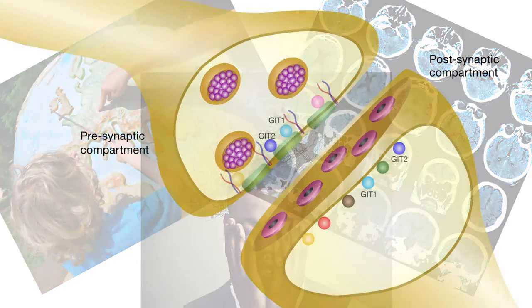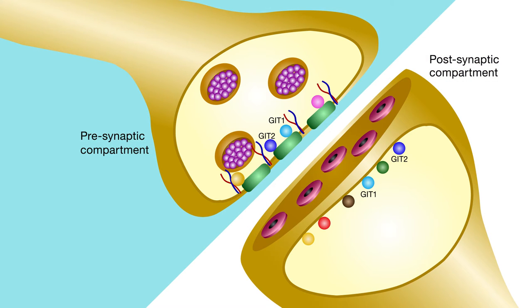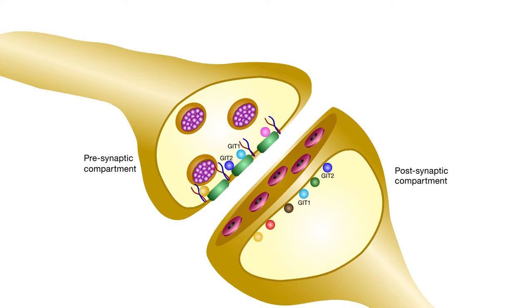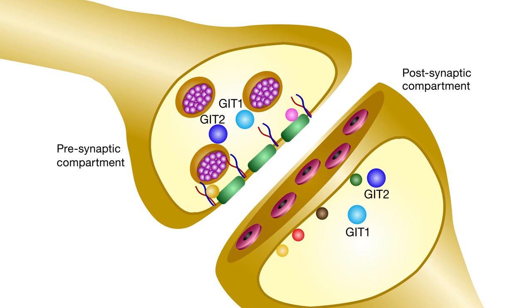Although the function of GITs in the post-synapse has been characterized, the role of GITs in the pre-synapse has remained unknown. Part of the problem is that pre-synapses are usually too small to probe directly, and that GIT proteins are expressed in both the pre- and post-synaptic compartments.